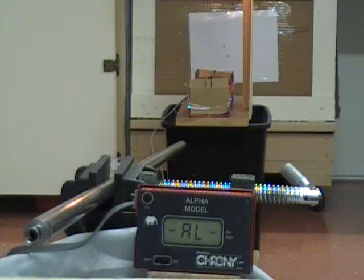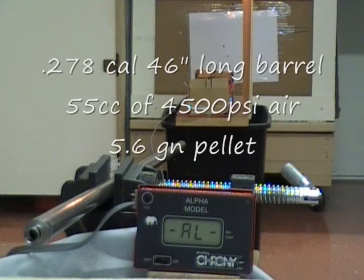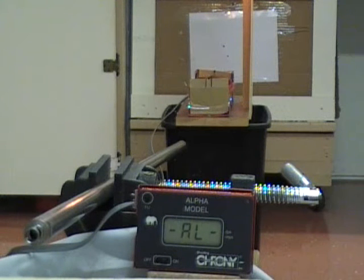Hello, this is Lloyd from the Airgun Lab again. We're going to be trying to take another high velocity shot. .278 caliber, 46-inch long barrel, about 4,500 psi of air. Doing it a little bit differently this time.